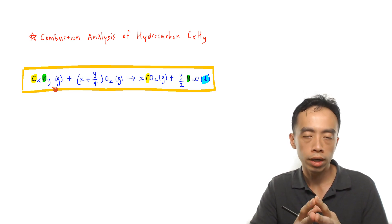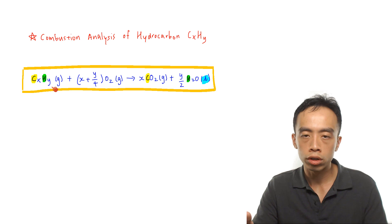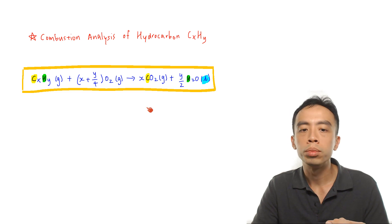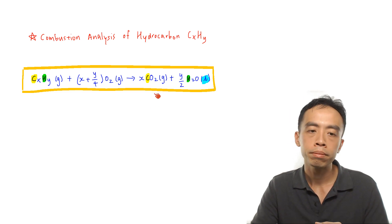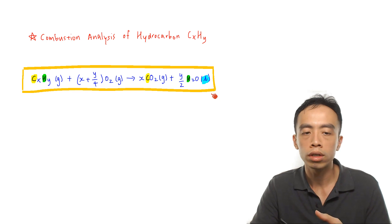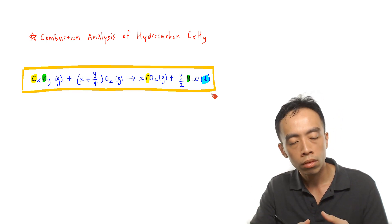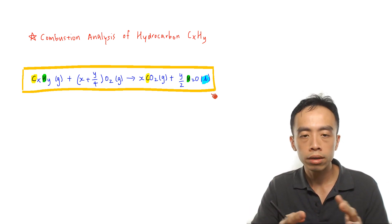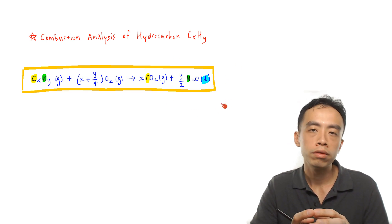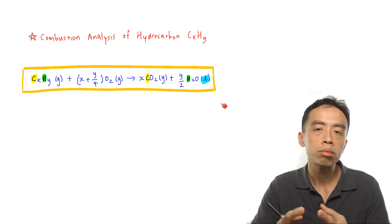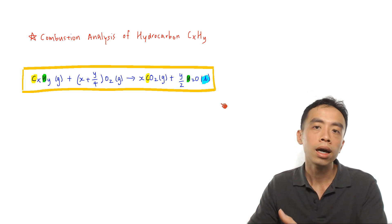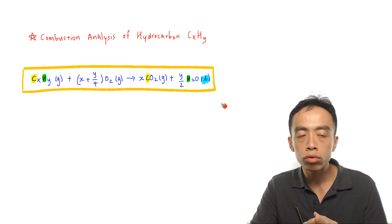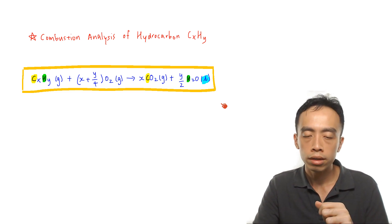We always do complete combustion of the hydrocarbon in excess oxygen because we want all the carbon converted to carbon dioxide and all the hydrogen converted to water. If we do incomplete combustion, we get a mixture of products like unburned carbon, soot, and carbon monoxide — making it much more troublesome to capture all different carbon-containing products. So for combustion analysis, we only want complete combustion.